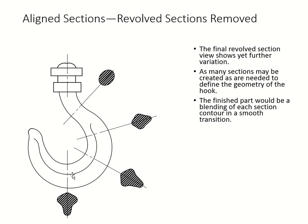The fourth section is at yet another location where the contour on the inside and outside is different, so you can see the hook section. It depends on the geometry of the hook — you can do as many revolve removes as needed. Sometimes the tip is different, and the starting point of your hook is different from the endpoint.